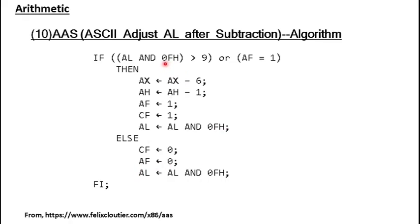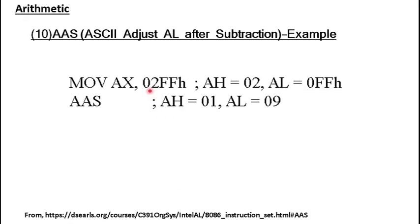At the end, AL is filled with what was left in its lowest nibble. If it already contains a valid digit in the lowest nibble, we just ensure that digit takes up the entire space of AL. For example, with 02FFh in AX — so FFh is in AL — after AAS adjustment, 1 will be present in AH and 9 will be present in AL. We perform 15 minus 6, leaving 9, and in the next byte we subtract 1, leaving 1. That's how AAS works.